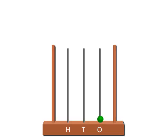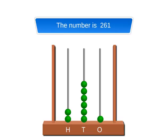Here, 1 bead is shown on the ones spike, 6 beads are shown on the tens spike, and 2 beads are shown on the hundreds spike. So the number is 261.